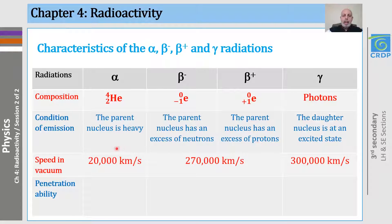Now, let me add a little piece of information to what we did last time, and it's about the speed in vacuum of each of these four radiations. For alpha, the speed is 20,000 kilometers per second. For beta minus and beta plus, it's about 270,000 kilometers per second. And for gamma, it's about 300,000 kilometers per second.